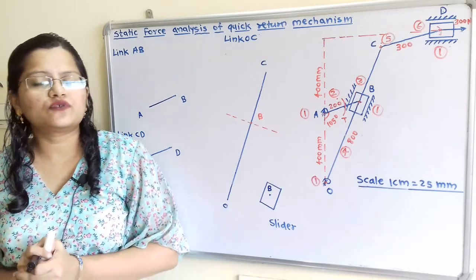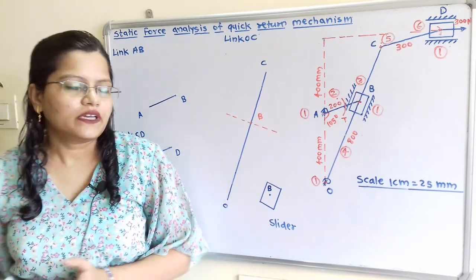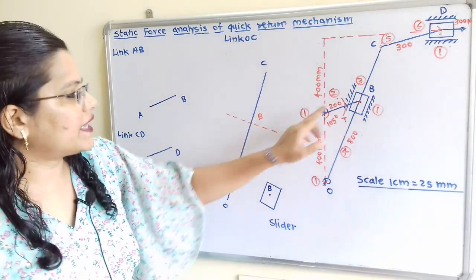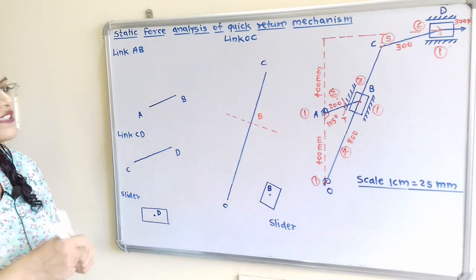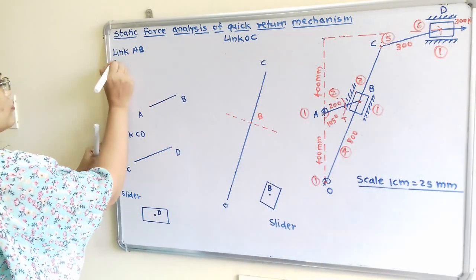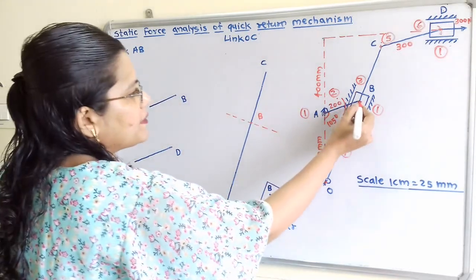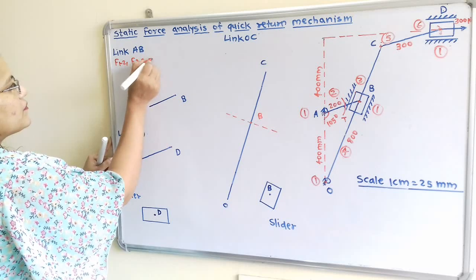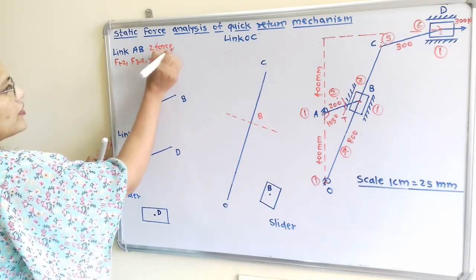The first step is to identify the types of members. For link AB: at point A the force applied is F of 1 to 2 (fixed point), and through point B the force is F of 3 to 2. There is also one torque. So link AB is a two-force and one-torque member.